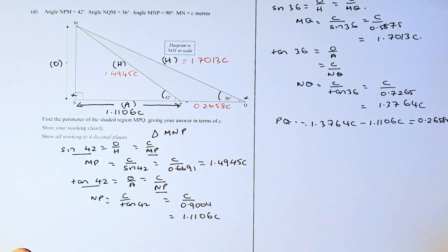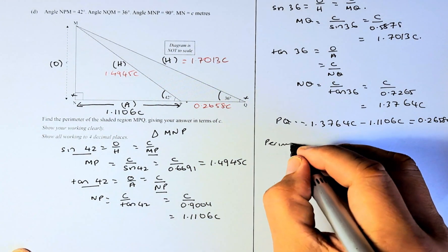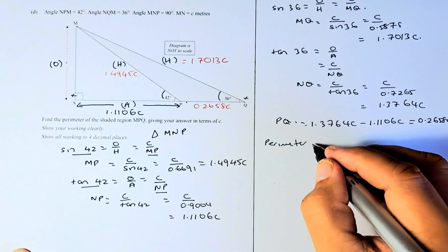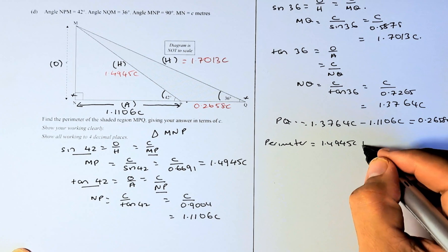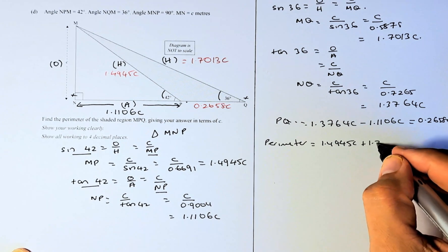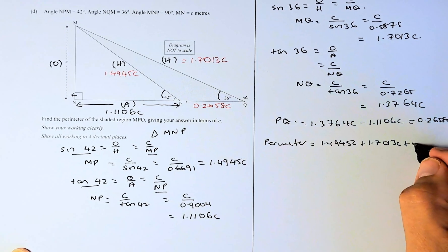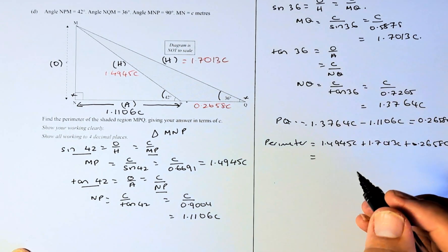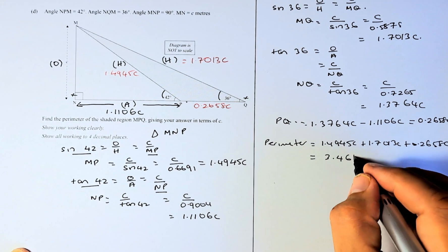To calculate the perimeter of the shaded region, we add all three lengths in red: 1.4945C plus 1.7013C plus 0.2658C. The answer is 3.4616C.